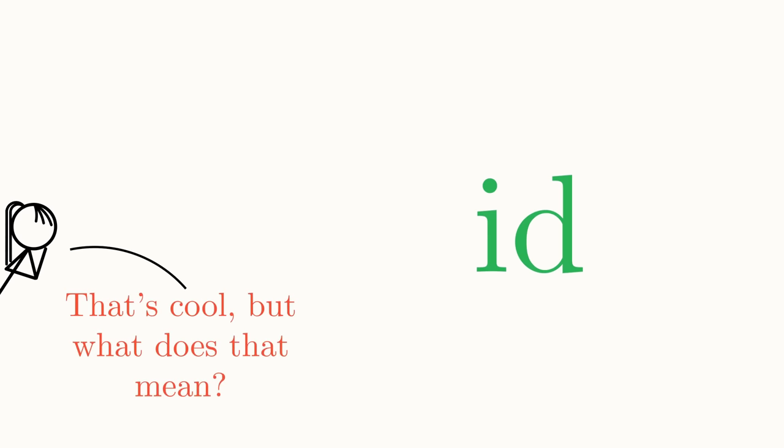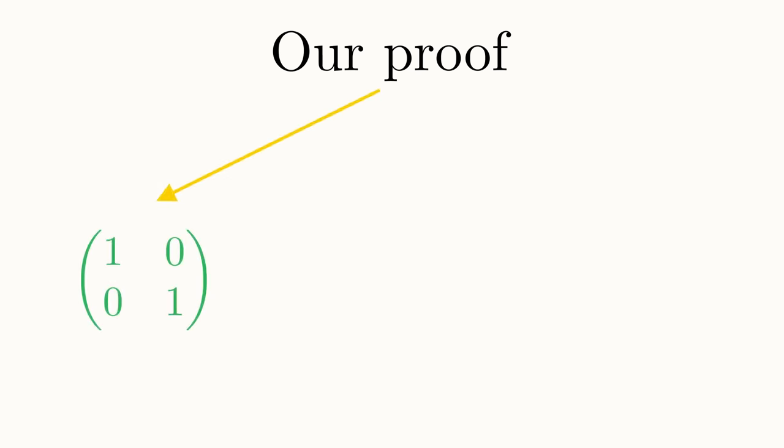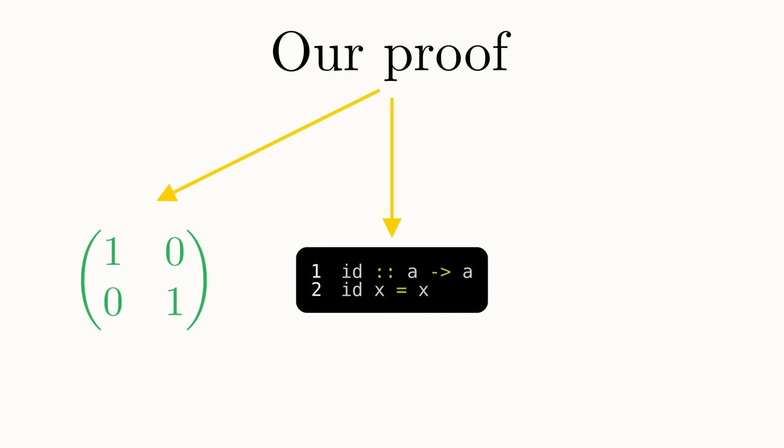This may seem rather anticlimactic, as admittedly this is a rather trivial proof, but I'd like us to really appreciate the far-reaching consequences of such a simple proof. We have shown that there exists one identity matrix for a given dimension, that there is only one identity function in a functional programming language for each data type, and that there is only one possible identity mapping from a set to itself, all in one neat little proof.